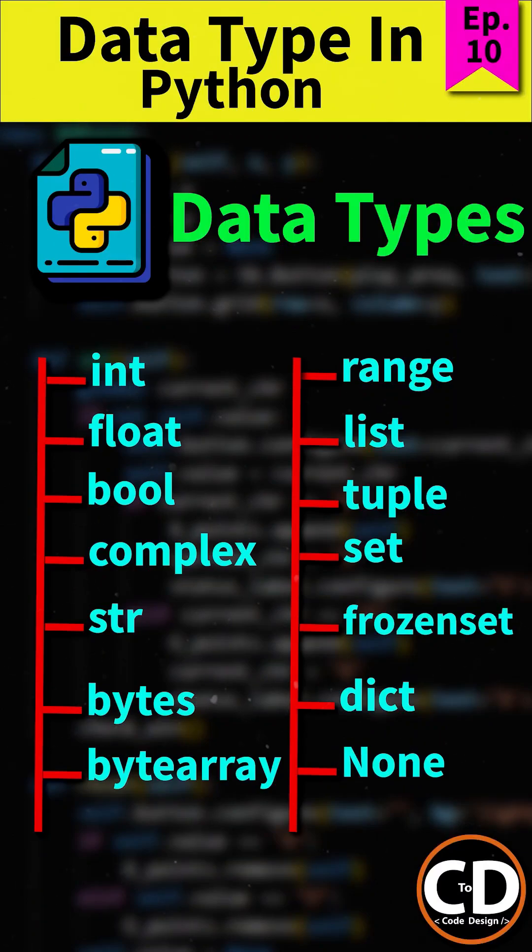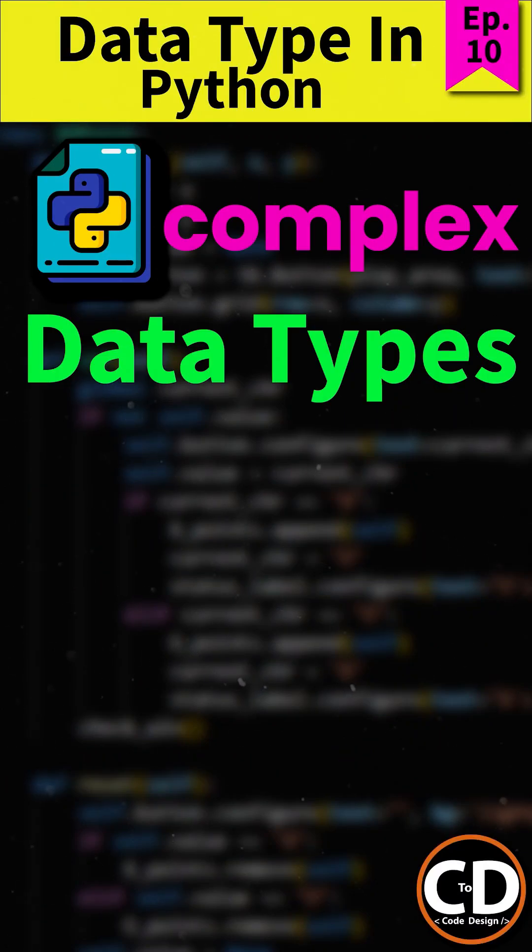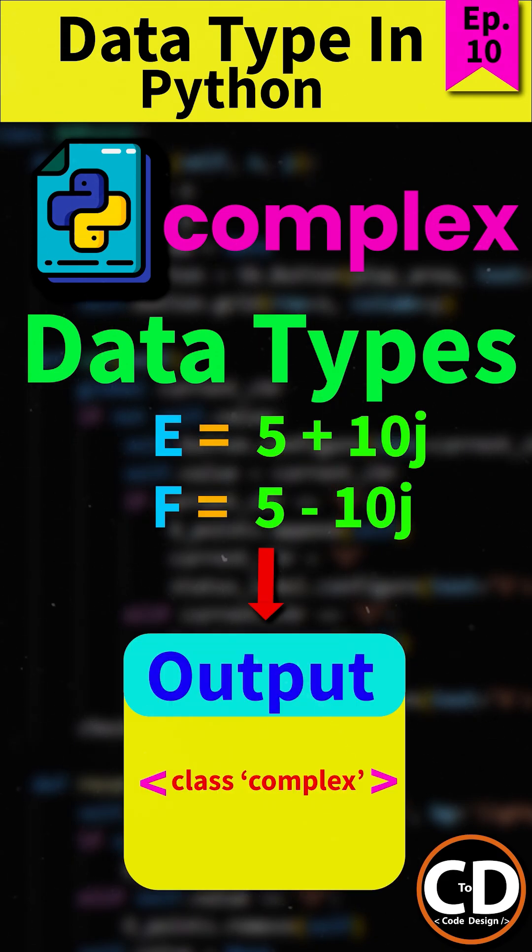Now, let's talk about the complex data type in Python. Just like int, float, and bool, complex is also a built-in data type, and it's used to store complex numbers.